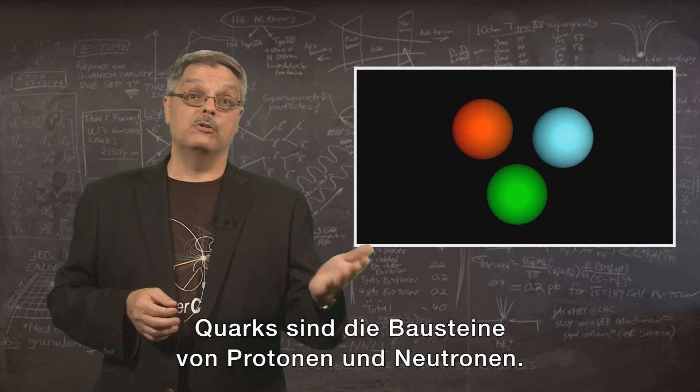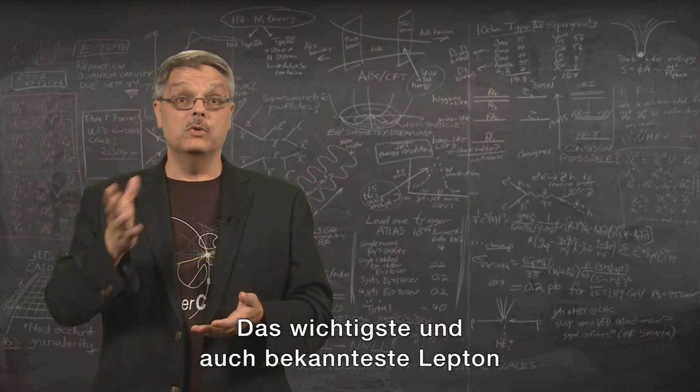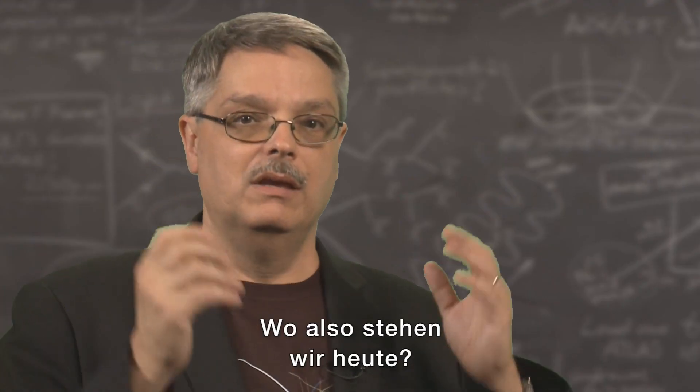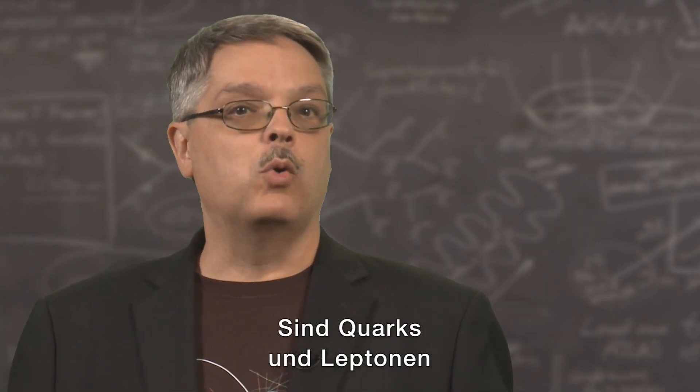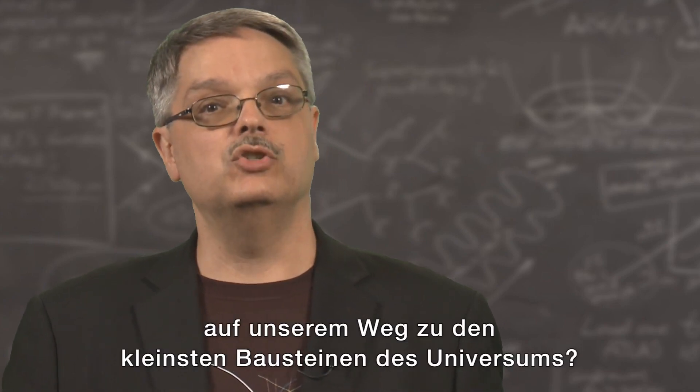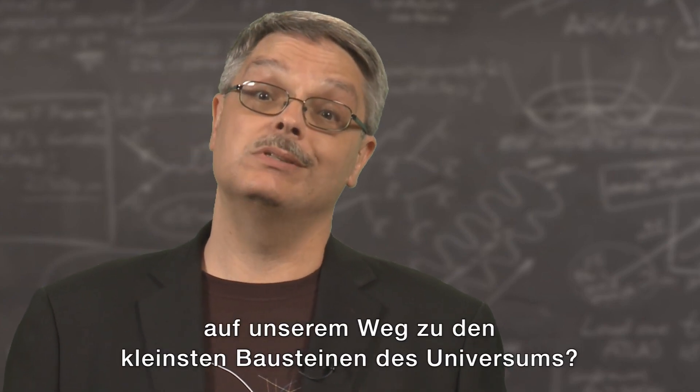Quarks are found inside protons and neutrons, and the most important and familiar lepton is the electron. So where do we stand? Are quarks and leptons the final word, or are they just a way station in our journey to find the smallest constituents of the universe?